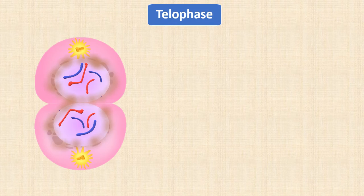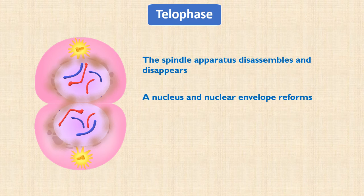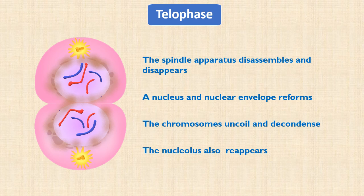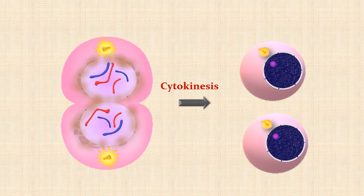Finally, in telophase, the spindle apparatus disassembles and disappears. A nucleus and nuclear envelope reforms around each set of daughter chromosomes. The chromosomes uncoil and decondense. The nucleolus also reappears. With telophase, mitosis is complete — a single nucleus has been divided into two daughter nuclei. Finally, it is the process of cytokinesis that actually divides the cell into two.